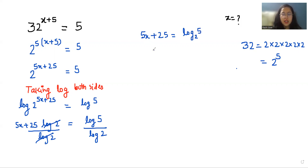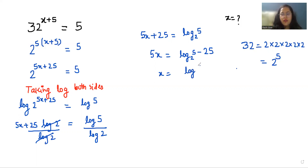So 5x = log₂(5) − 25, and therefore x = (log₂(5) − 25) / 5. This is the value of x.